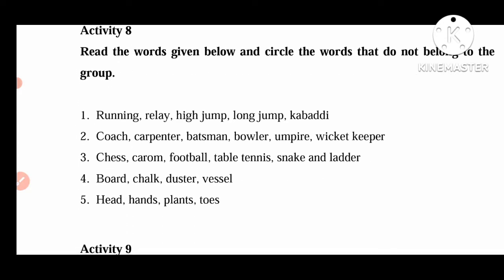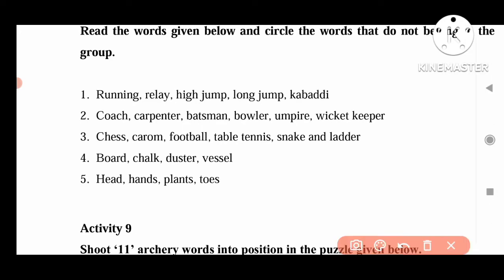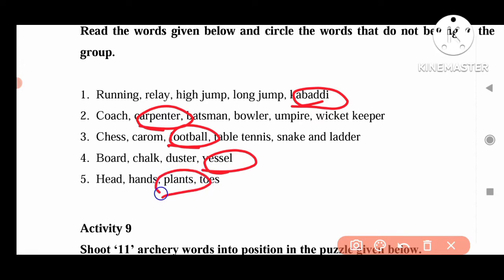Read the words given below and circle the words not belonging to the group. Running, relay, high jump, long jump, kabaddi — kabaddi is not belonging because these are all athletics. Next: coach, carpenter — carpenter is not belonging because these all belong to the playing group. Chess, carrom, football, table tennis, snake and ladder — football is not belonging because all others are indoor games, this is an outdoor game. Board, chalk, duster, vessel — vessel is not belonging. Head, hands, plants, toes — plants are not belonging because these are all parts of the body.